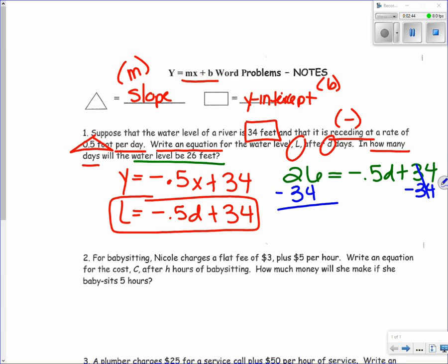Because 34 is bigger and we're subtracting it, I know the answer will be negative. Remember, if you're already in the negatives and we add 26 more, we stay in the negatives. To figure out the answer, I'm going to subtract 26 from 34, which gives me 8. So it's negative 8 equals negative 0.5D.